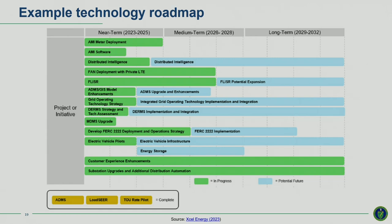This figure is from Xcel Energy's recently filed distribution plan in Minnesota. It shows how planned investments fit together over a 10-year plan and gives a more cohesive understanding of all the investments the utility intends to make. At the very bottom in yellow are completed distribution projects, in green are projects in process, and in blue are planned projects over the near, medium, and long term.